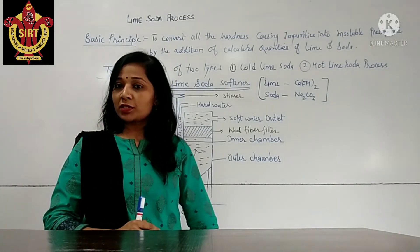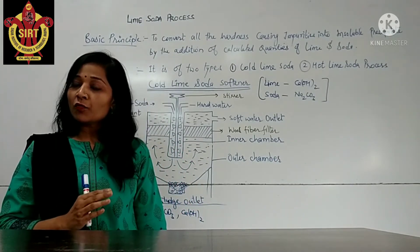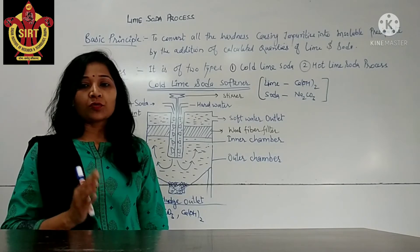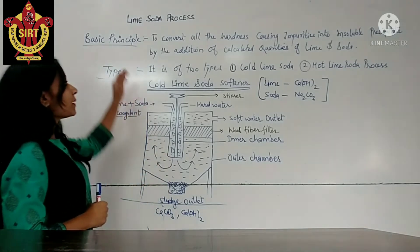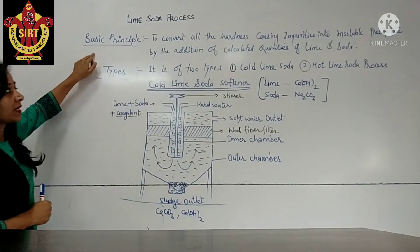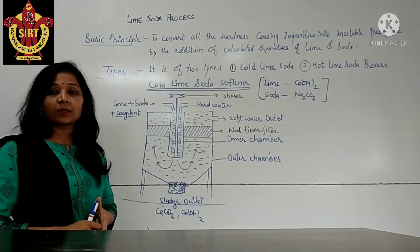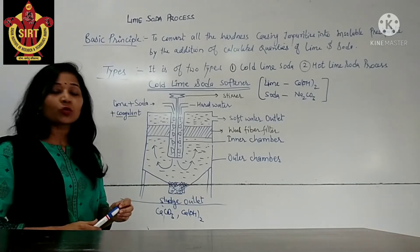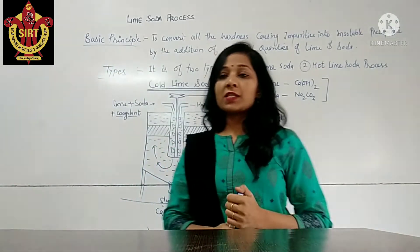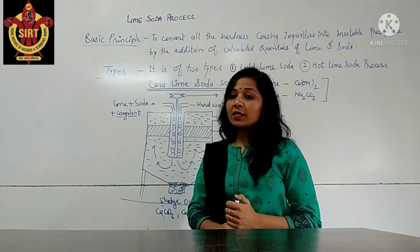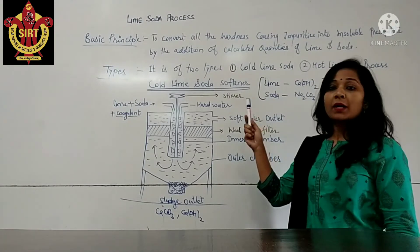Today we will study about the lime soda process. Lime soda process is one of the processes in which hard water is converted into soft water by the addition of lime and soda. The basic principle of lime soda process is to convert all the hardness-causing impurities into insoluble precipitate by the addition of lime and soda.